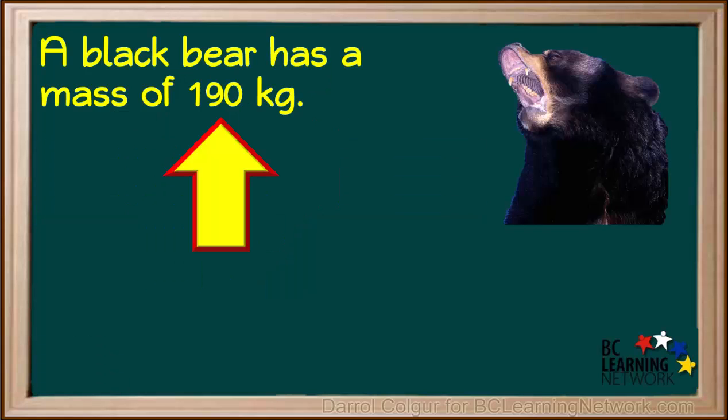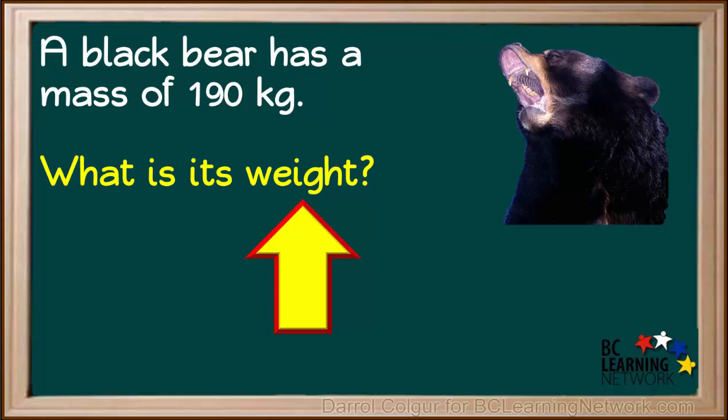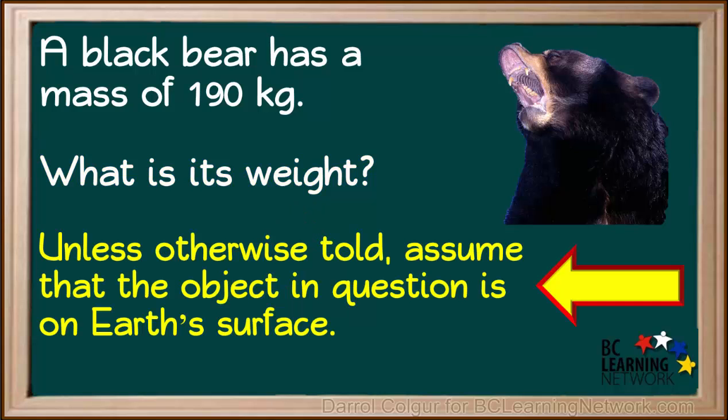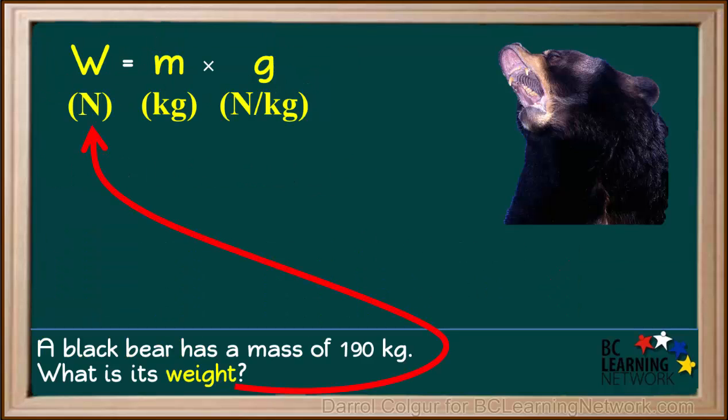Here is an example question. We are given that a black bear has a mass of 190 kilograms, and we are asked for its weight. It is important to know that for any questions involving mass and weight, if you are not told otherwise, assume that the object in question is on the surface of the Earth. We are asked to calculate the weight, and we are given mass.